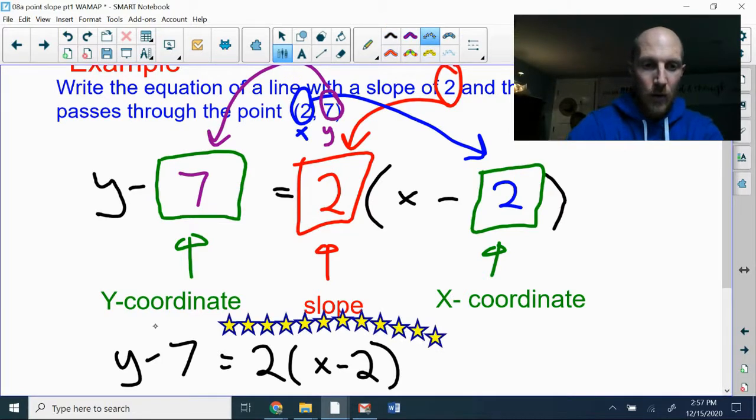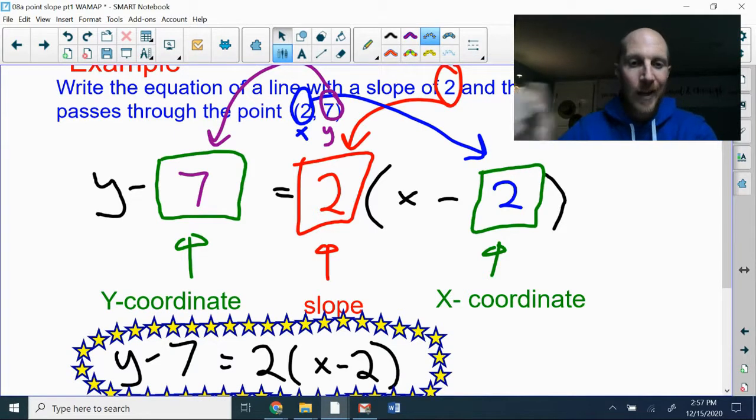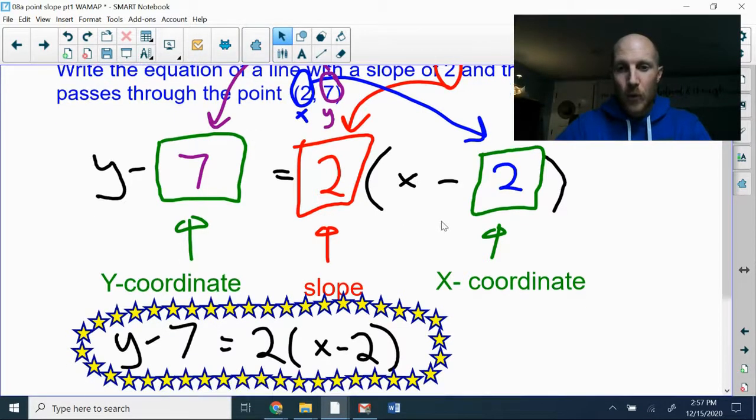The thing we notice about this final equation is that where we find the x-coordinate is inside the parentheses where the letter x is, and it says x minus 2. But the original coordinate is a positive 2, so in the equation it has the opposite appearance. It looks negative. It's not. The negative sign is part of the equation, not part of the coordinate, which is confusing. The same thing happened with our y-coordinate. On the left side, y minus 7, but that came from a positive 7 as the coordinate.